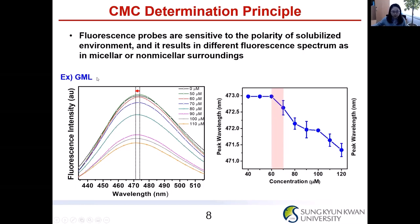For example, in the GML case, as you increase the GML concentration, you can see the maximum peak of the spectrum starts to decrease. The CMC value is determined at the point where the peak wavelength starts to decrease. In the GML case, we determined the CMC to be 60 micromolar.